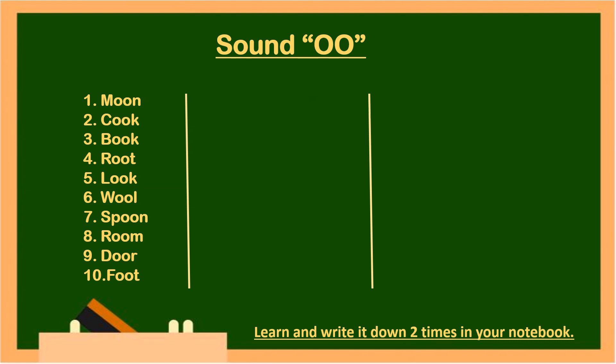Now in your English notebook, write down sound of double O words as given here: moon, cook, book, root, look, wool, spoon, room, door, foot.